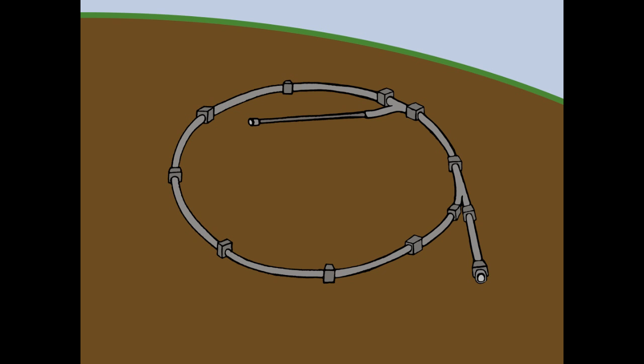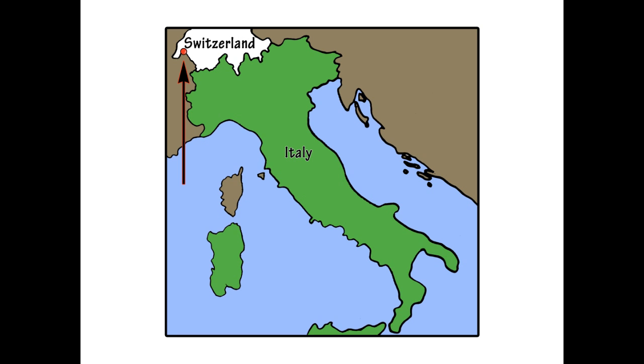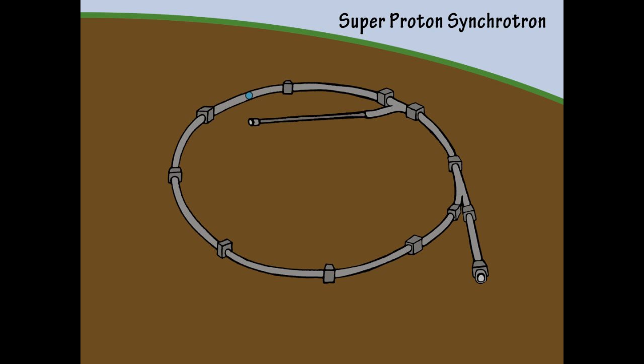Let's move on to the OPERA experiment. This so-called superproton synchrotron, which is located in Geneva, Switzerland, is used to accelerate bursts of protons and produce neutrinos in the process.